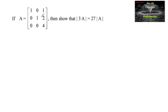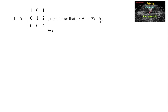If A is equal to the matrix [1 0 1; 0 1 2; 0 0 4], a 3×3 matrix, then show that the determinant of 3 times matrix A is equal to 27 times the determinant of matrix A.